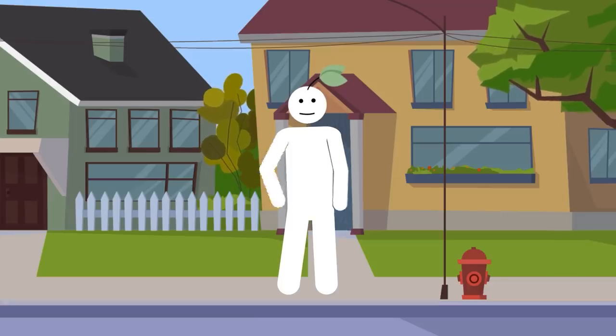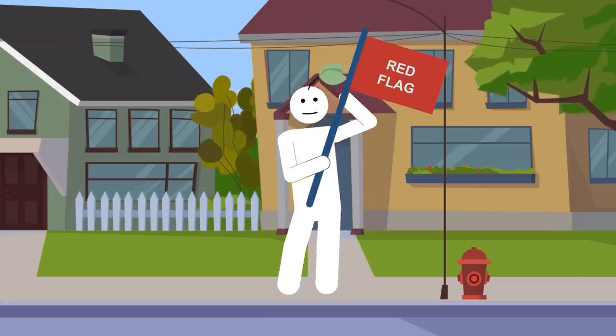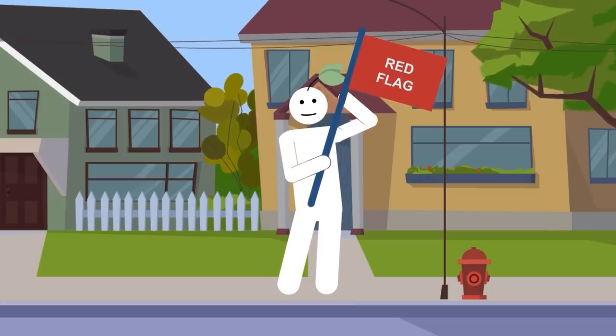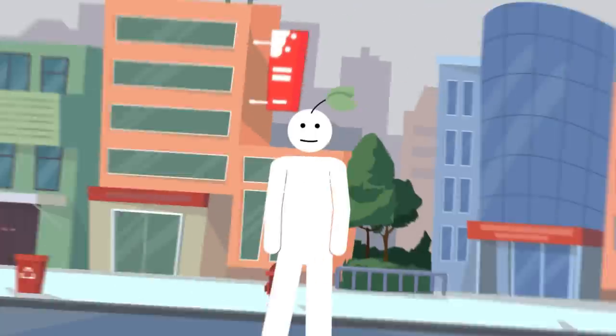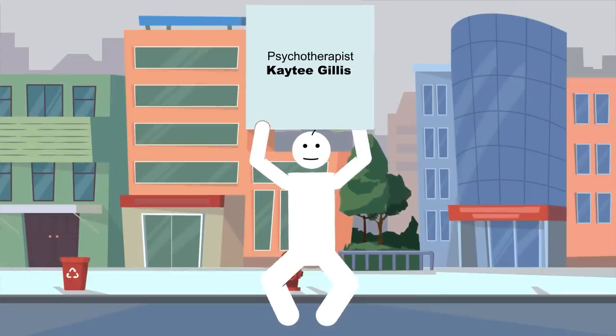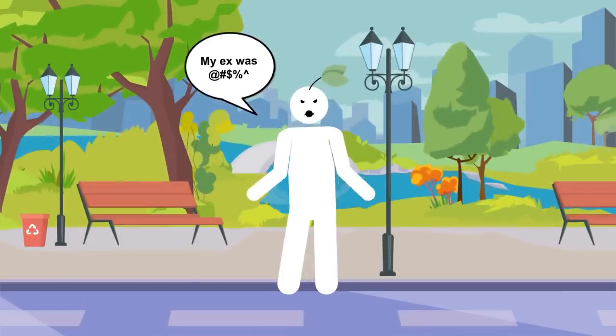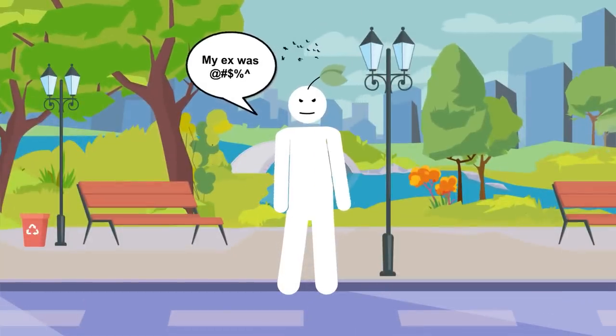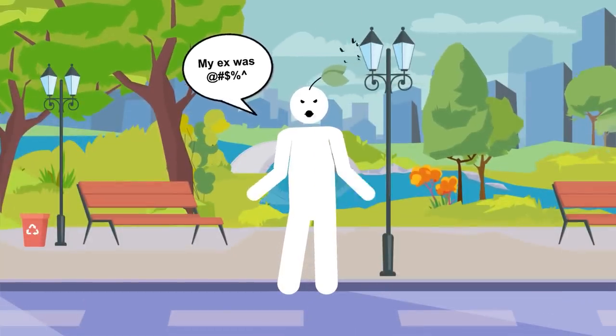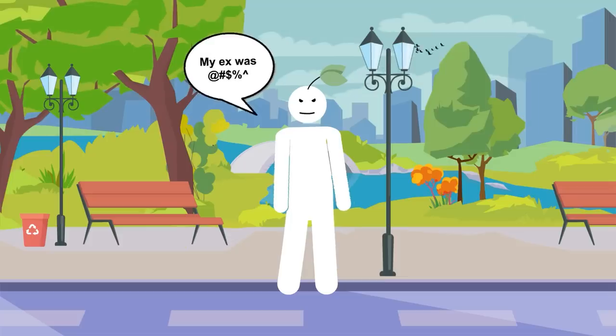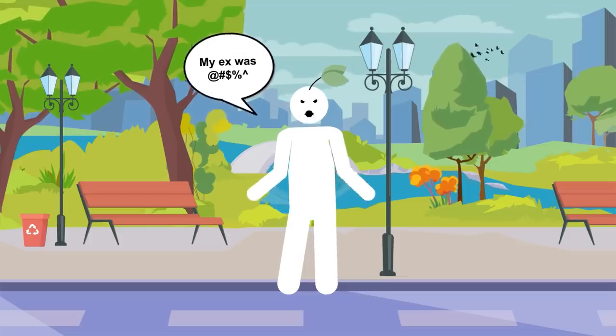On a first date, it's also a good idea to look out for the big red flag of someone negatively ranting about their ex. Psychotherapist Katie Gillis explains in Psychology Today that it shows an enormous lack of respect towards others in their life and ultimately speaks to their integrity. There is an appropriate way and time to discuss concerns and issues with previous partners, so watch how this is done.